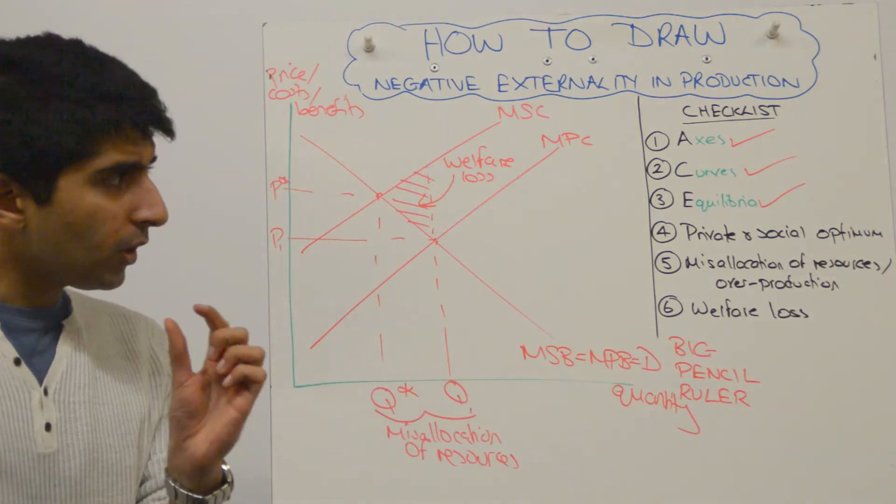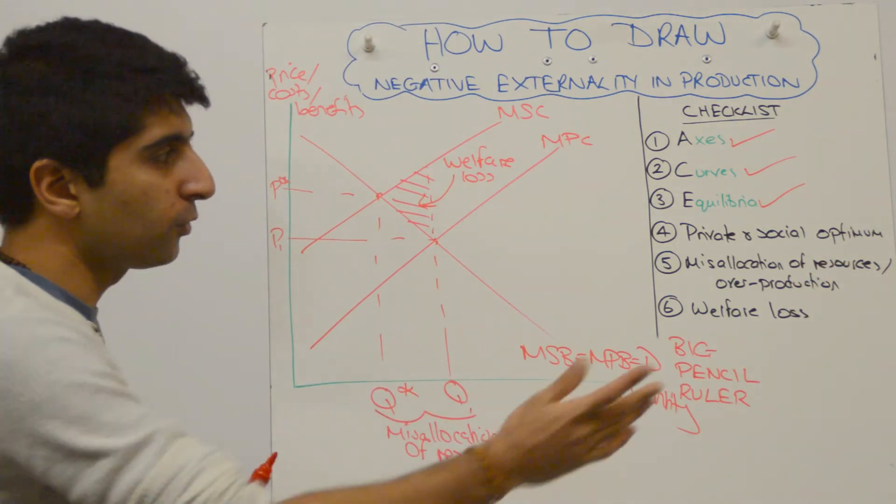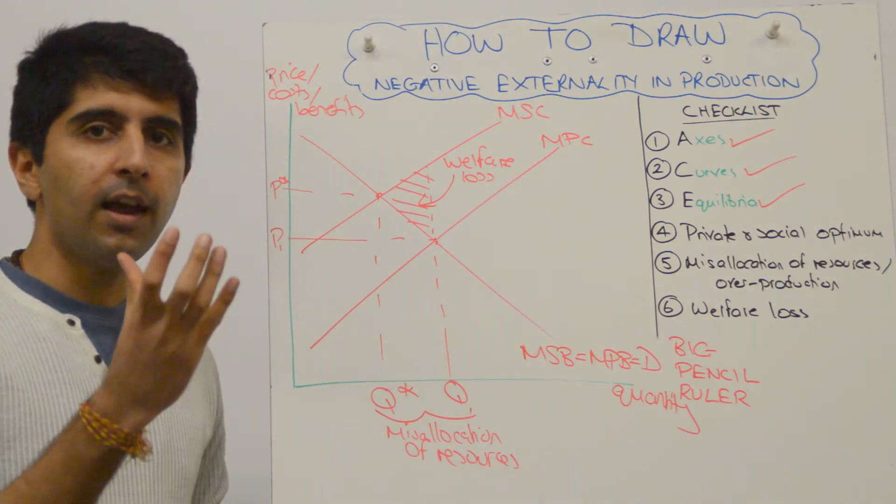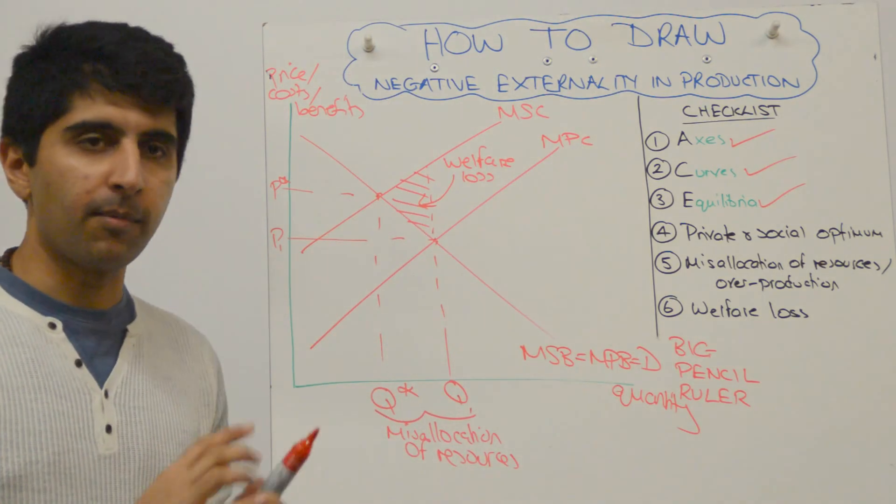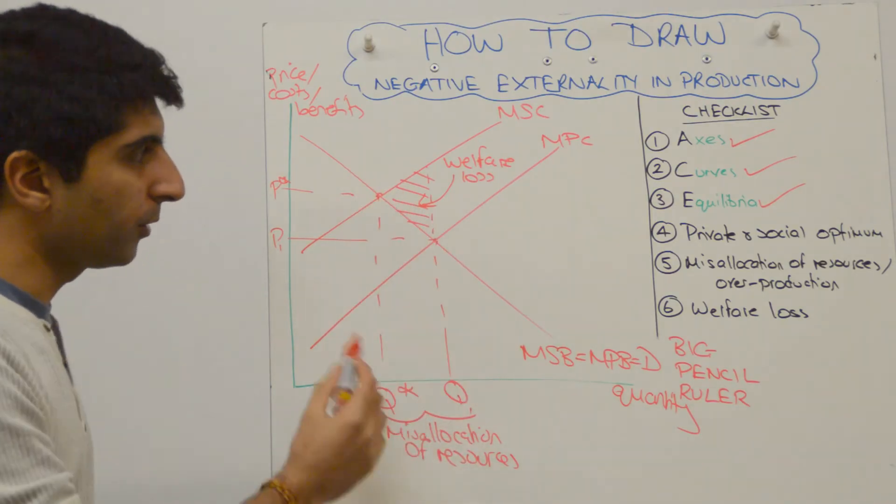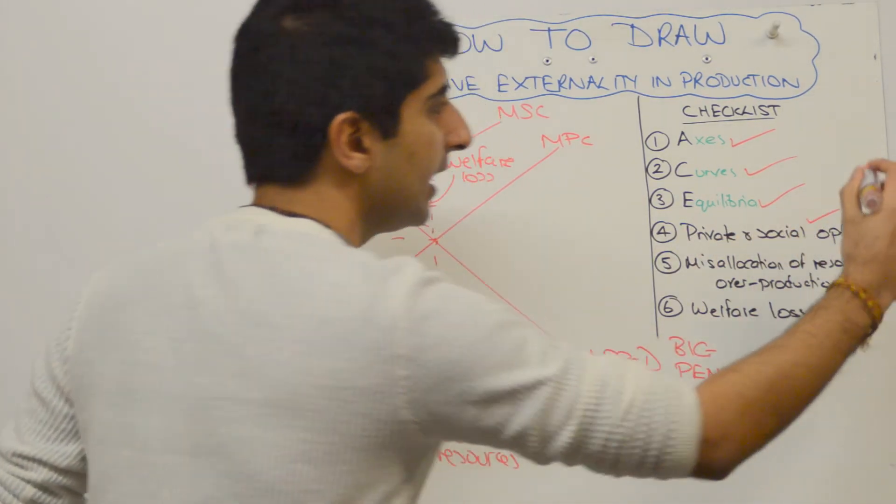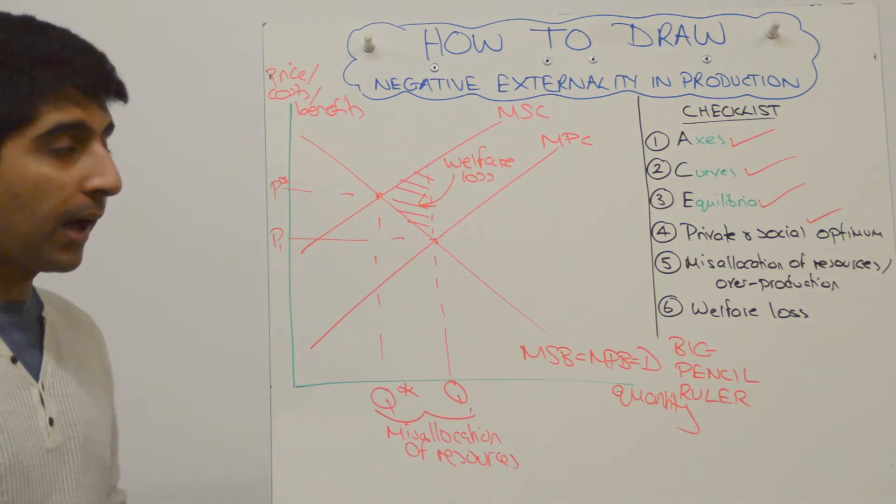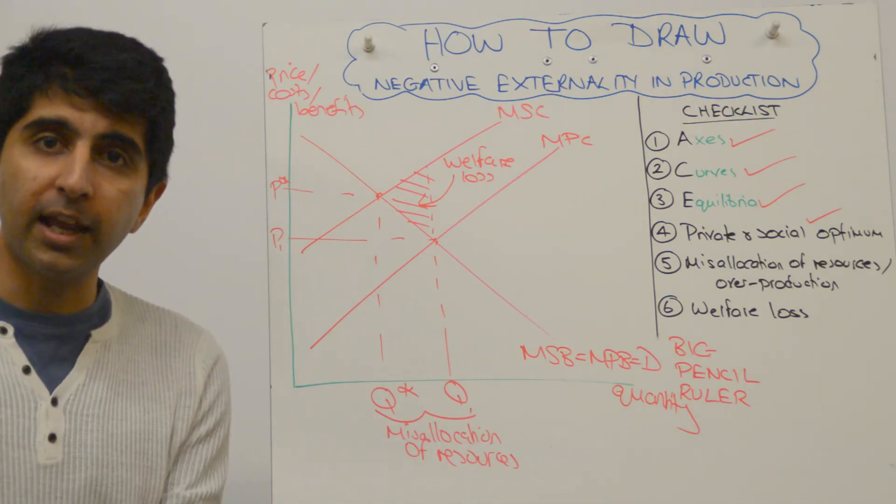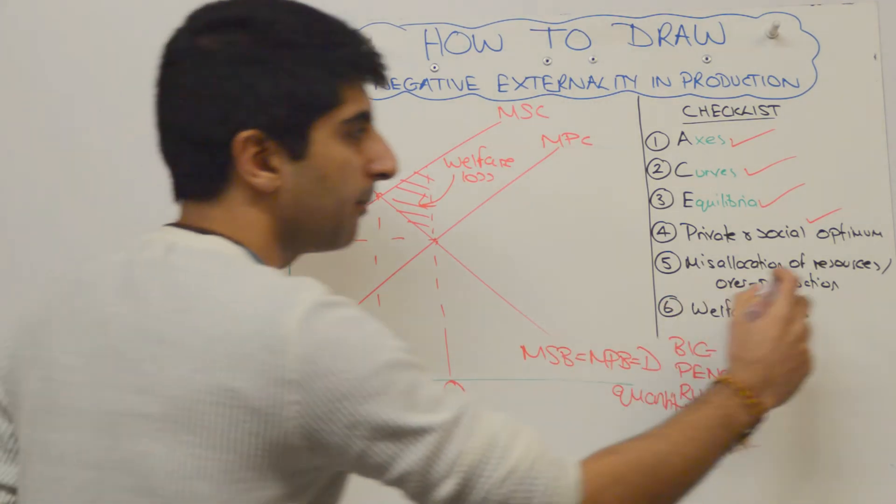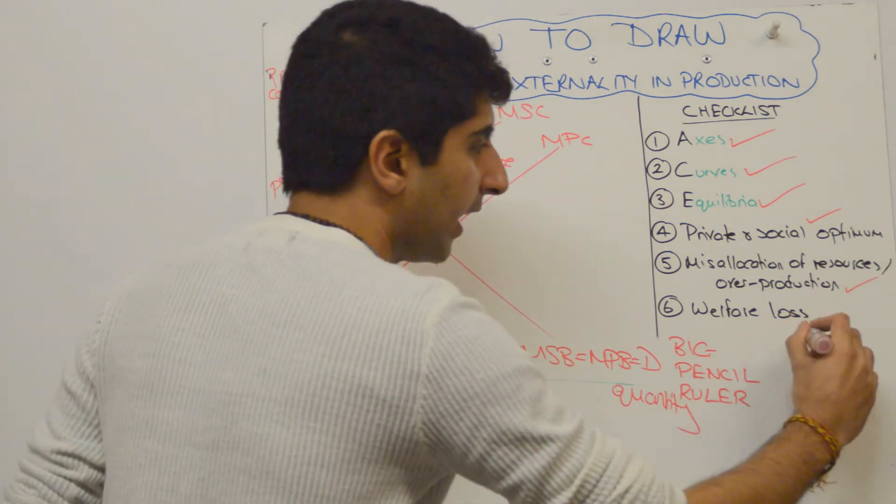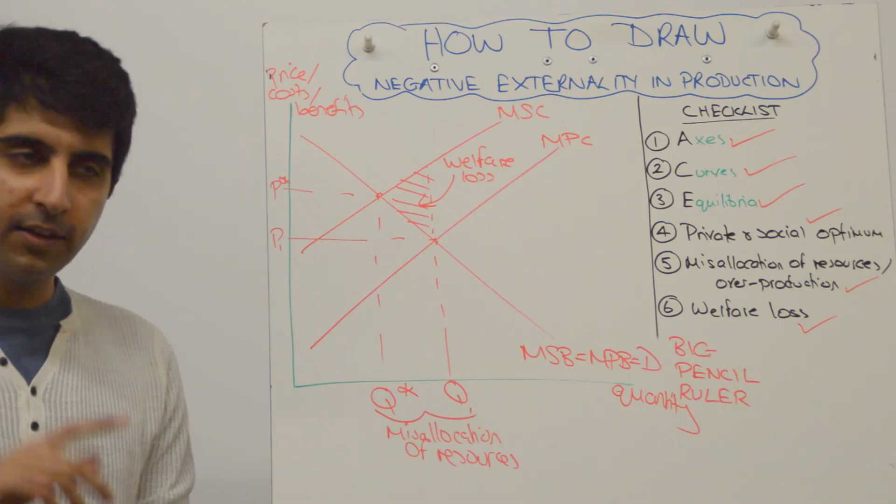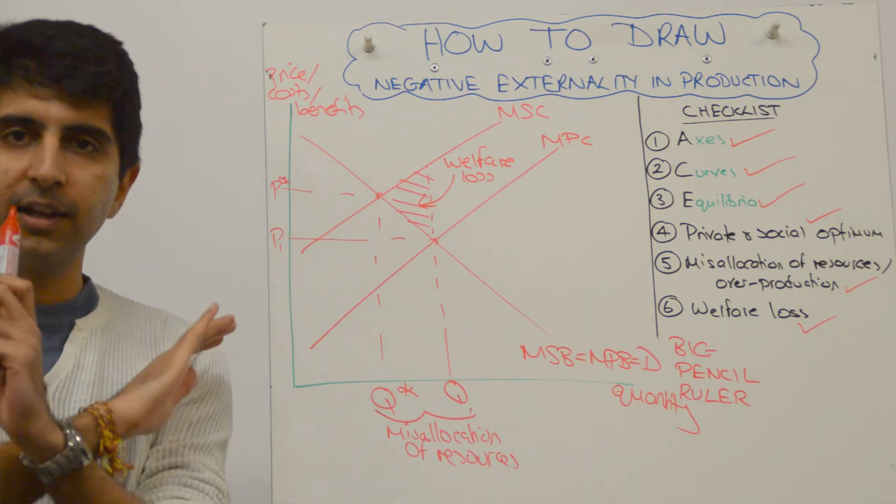Do I have my private and social optimum? These are all separate, specific items in the checklist that refer back to this diagram in particular. Well, I've got my private optimum and my social optimum clearly labeled. That's a tick there. Have I shown an overproduction or a misallocation of resources? Yes, I have. I've made that clear on the diagram too. Have I shown my welfare loss? Yes, I have. If all of that's done, tick, tick, tick, tick, tick, tick, tick. Diagram finished.